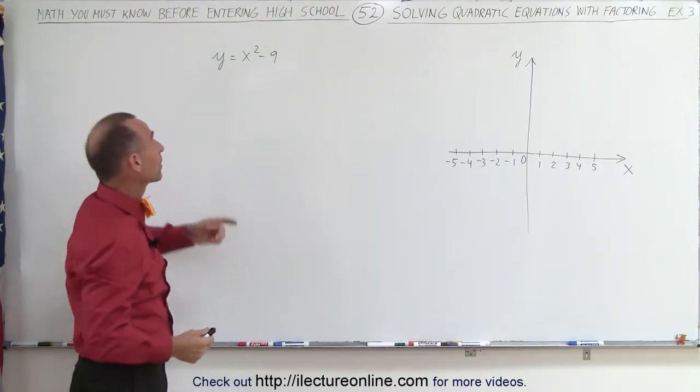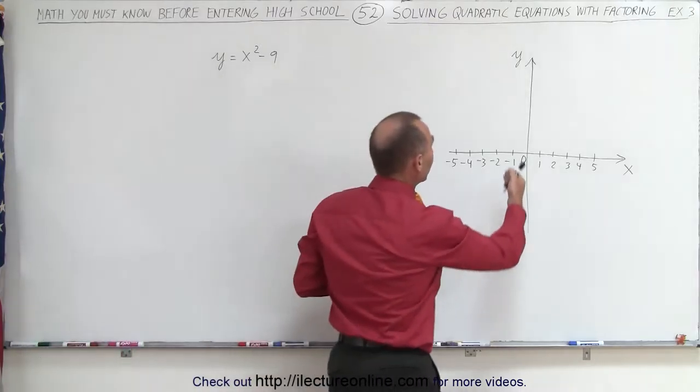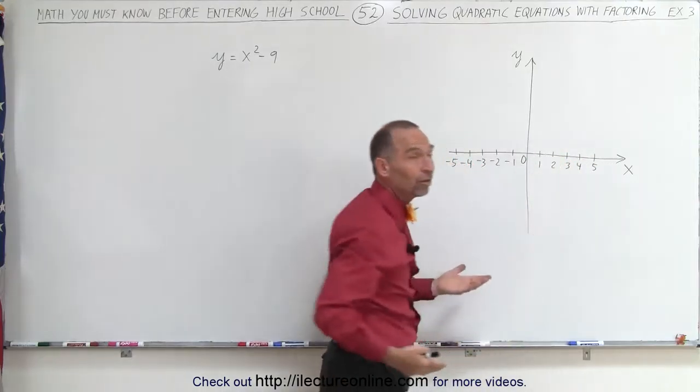In order to solve it, we have to set y equal to 0. Why is that? Well, whenever something crosses the x-axis, at that point, anywhere along the x-axis, the y-coordinate is equal to 0.